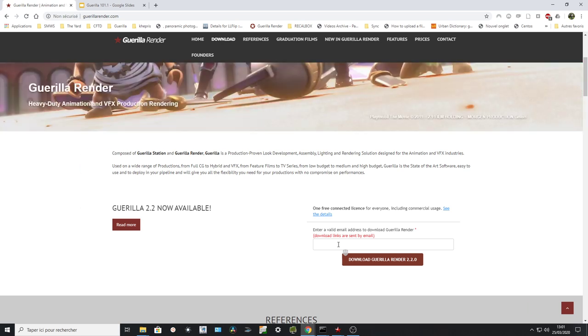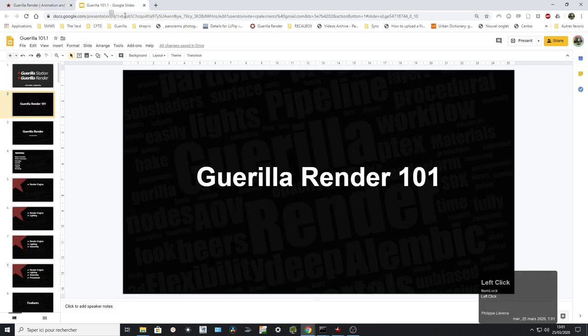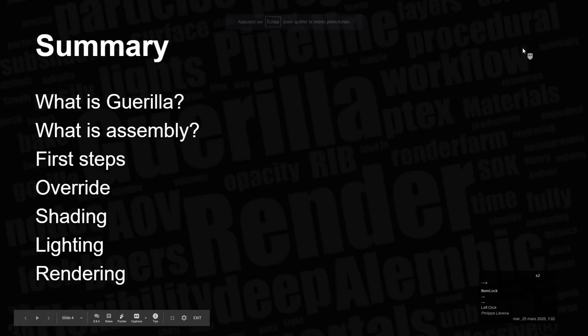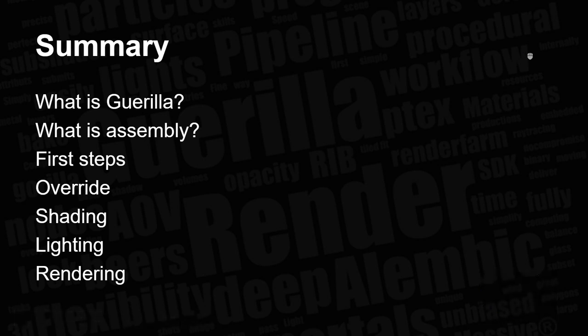So let's have fun with this first version. I want to introduce you to Guerilla Render. We're going to see what Guerilla Render is, what is assembly, our first steps in Guerilla Render. And later in the next part, we're going to see what is an override, how we can shade more deeply into the shading system, the lighting system and the rendering system. But for this session, we're going to stop at the first steps.